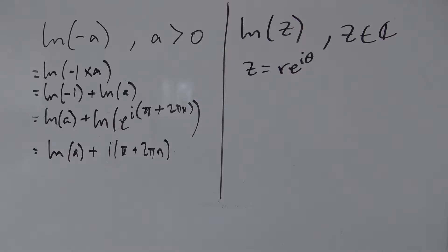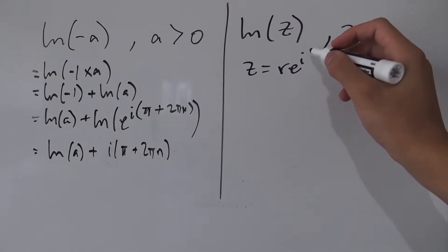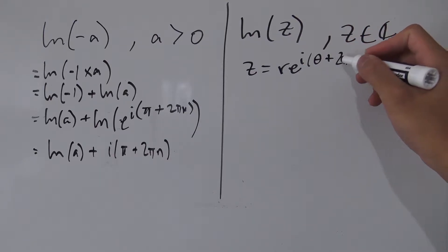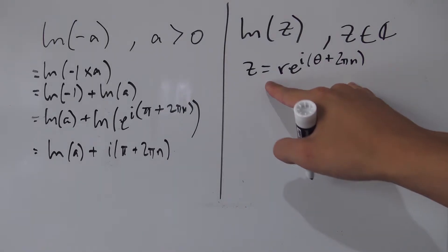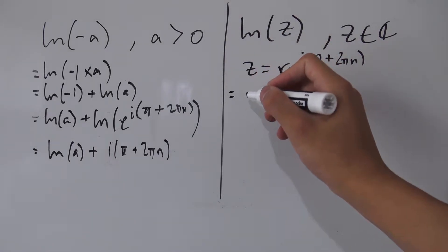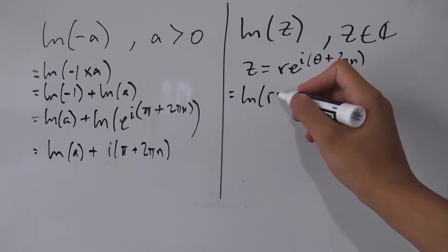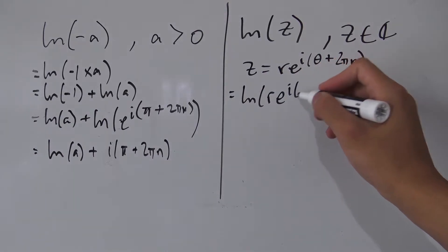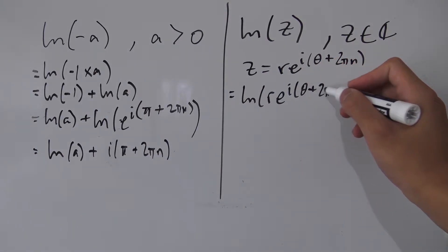But remember we're not actually done yet, because with this theta here we can add 2 pi to it and we're going to still land on the same complex number. So really what it should be is theta plus 2 pi n like so. So let's substitute this part into this natural log.